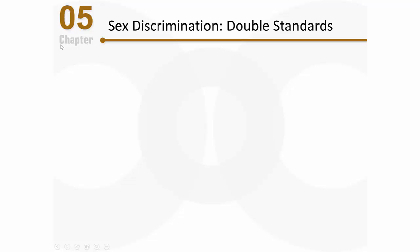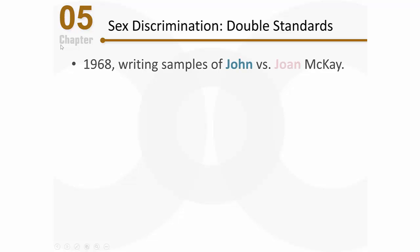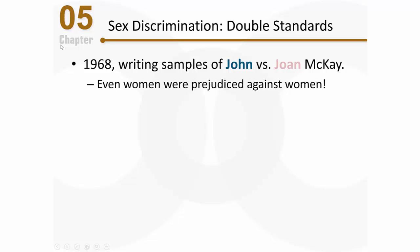Let's talk about sex discrimination and specifically double standards. In the 1960s, researcher Philip Goldberg enlisted female college students to evaluate writing samples — articles supposedly written by either John McKay or Joan McKay. All women read the exact same material but believed it was written by either a man or a woman. They gave higher evaluations when they thought the samples were written by men. This was deflating because it raised the question: are women also prejudiced against women? The findings were clear — even women were somewhat prejudiced against women.